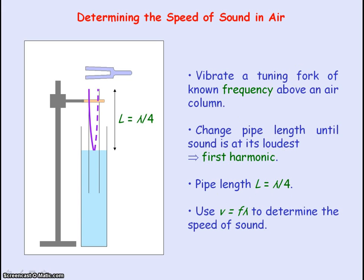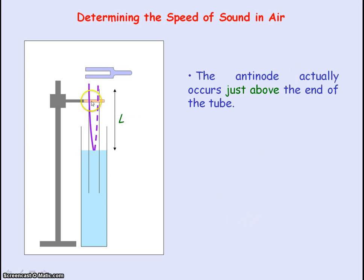However, this method will not give you an accurate value of the speed of sound because the anti-node actually occurs just above the end of the tube. An end correction factor is needed, which we will label C. So the pipe length L plus the end correction factor C will equal a quarter of a wavelength.